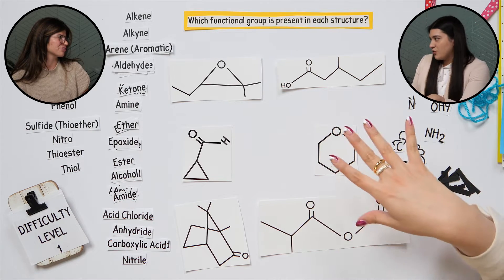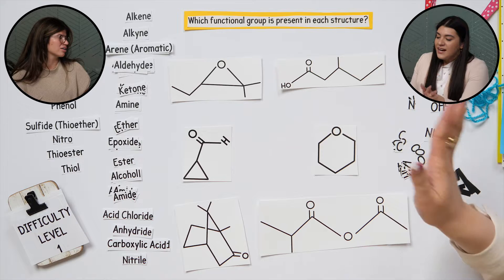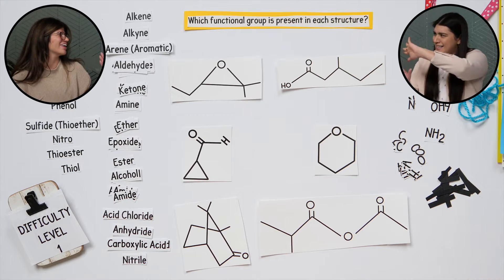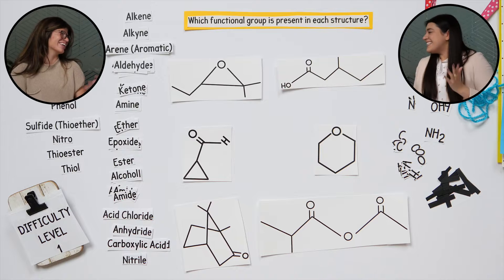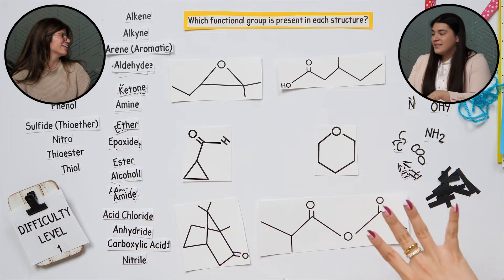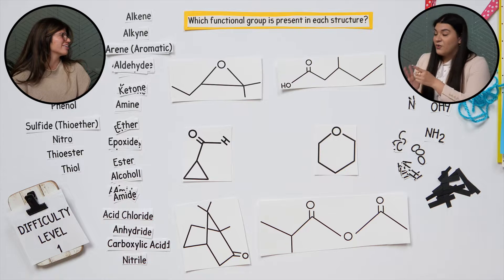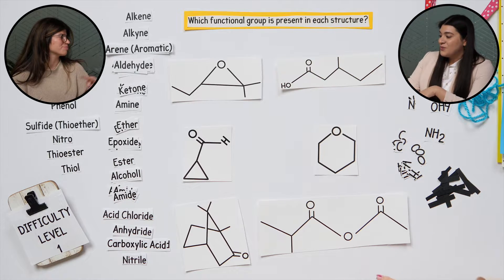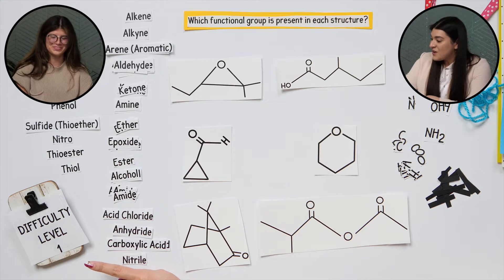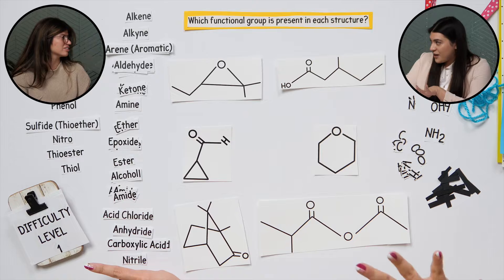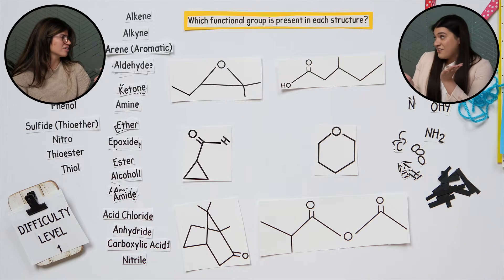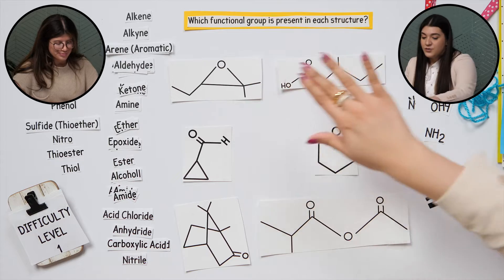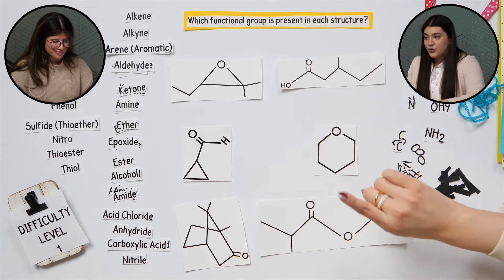Whenever you're asked a question like 'find the functional group' or 'label it' or 'identify it,' it's kind of like one of those games where they ask you to find the water bottle in a huge mess of pictures. Kind of like that — and that's pretty much what this is. So today we're going to focus on seeing what you remember from the video, practicing that, then getting into three different difficulty levels. I also have an ACS exam question we can try. Let's dive right in.